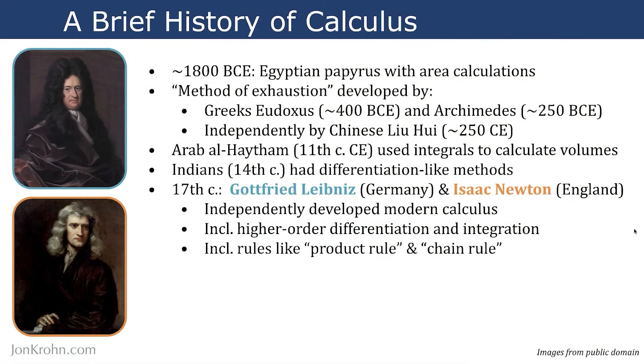This higher-order work allows us to go not only from distance to its first derivative, speed, but also to its second derivative, acceleration. Leibniz and Newton also came up with rules we can use to look at an equation and, in many cases, calculate derivatives and integrals by hand — things like the product rule and the chain rule.